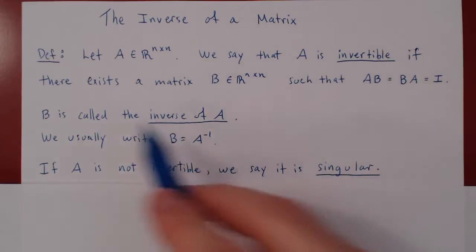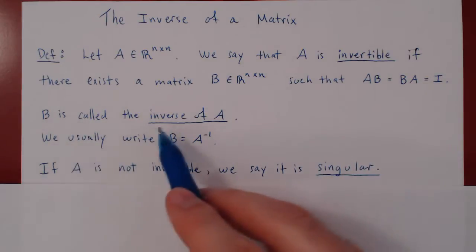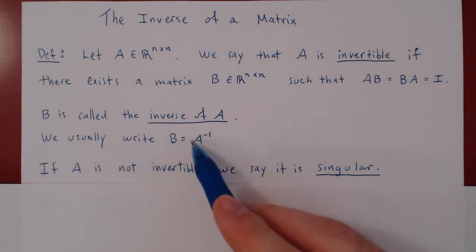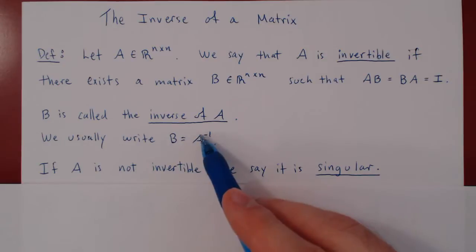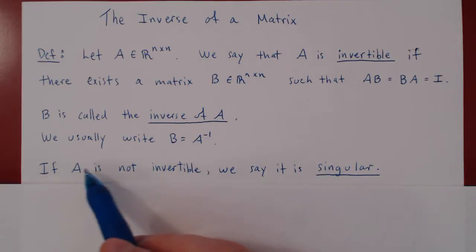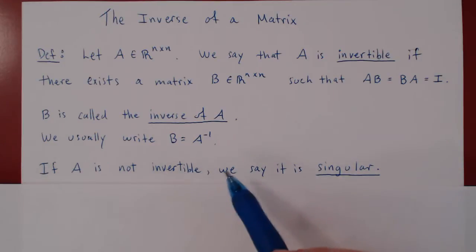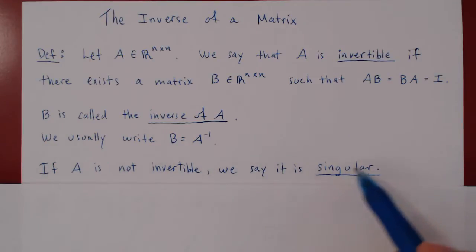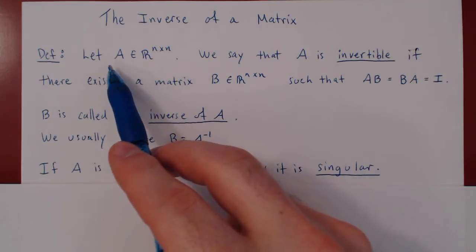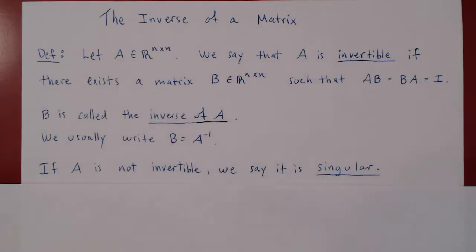If B exists, we call B the inverse of A, and we usually write B equals A to the negative 1 power. Not every matrix is invertible, and so if a square matrix is not invertible we say it is a singular matrix. The concept of invertibility only applies to square matrices.